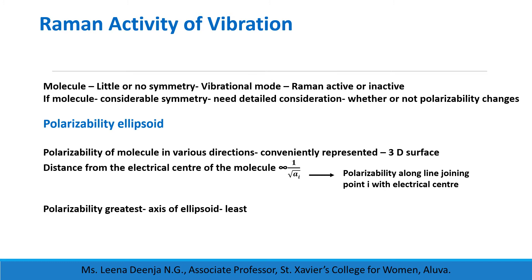When the polarizability is greatest along a particular axis, the corresponding dimension of the ellipsoid will be least. If there is maximum length in a particular direction of the ellipsoid, that indicates the polarizability along that direction will be minimum.